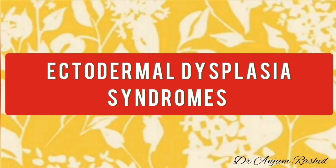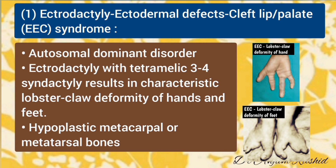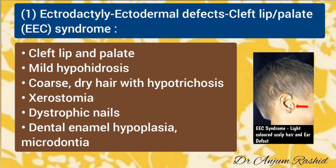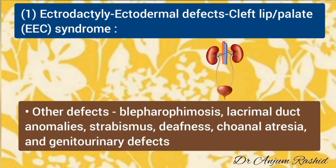The first of the three most common ectodermal dysplasia syndromes is ectodactyly, ectodermal defect, and cleft lip and palate syndrome, which has autosomal dominant inheritance. Ectodactyly means the deficiency or absence of one or more central digits of the hand or foot. Ectodactyly with tetramelic 3-to-4 syndactyly results in characteristic lobster claw deformity of the hands and feet, with hypoplastic metacarpal or metatarsal bones. Other features include cleft lip or palate, mild hypohydrosis, coarse dry hair with hypotrichosis, xerostomia, dystrophic nails, and dental enamel hypoplasia or microdontia. Associated defects may include blepharophimosis, lacrimal duct anomalies, strabismus, deafness, choanal atresia, and genitourinary defects.